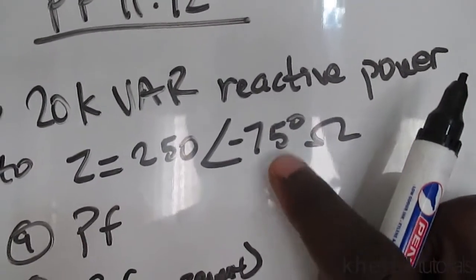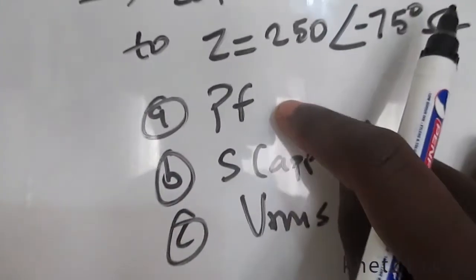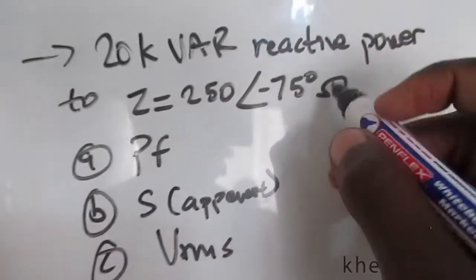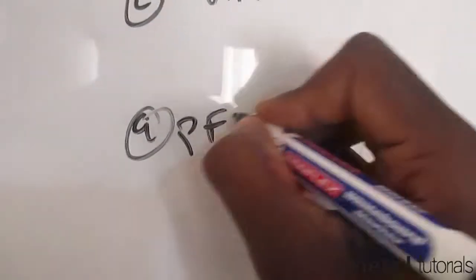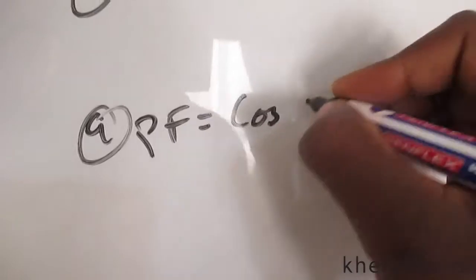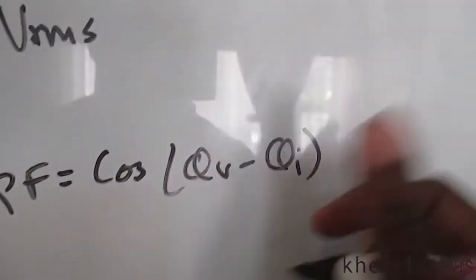The first part is asking for the power factor. We know that we can use this angle to find the power factor, as the power factor equals the cosine of that angle, which is the same angle found in the load impedance.